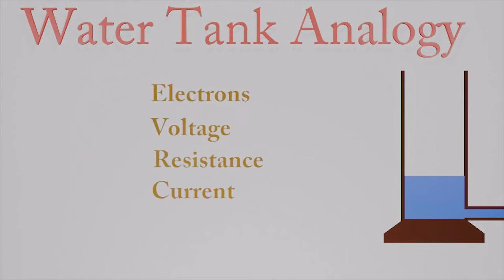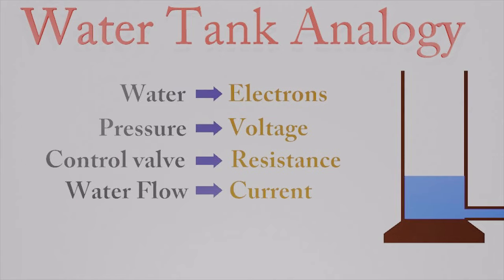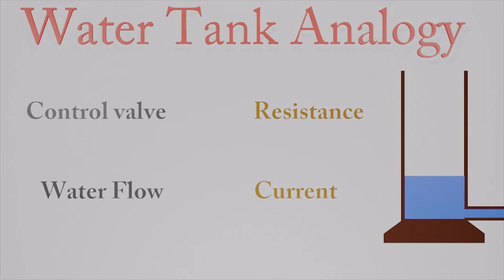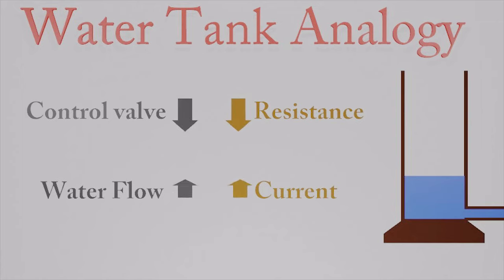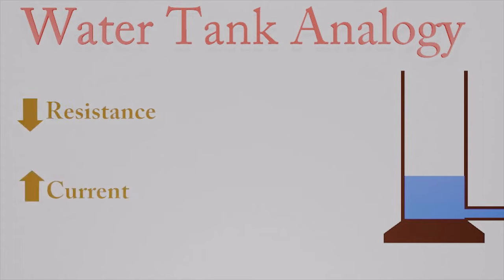That's the water tank analogy for electricity. Water represents the electrons, pressure represents the voltage, the control valve represents the resistance, and the water flow represents the electric current. If we close the control valve, the water flow decreases. In the same way, an increase in resistance causes a decrease in current. If we open the control valve, the water flow increases. In the same way, decreasing resistance causes an increase in current.